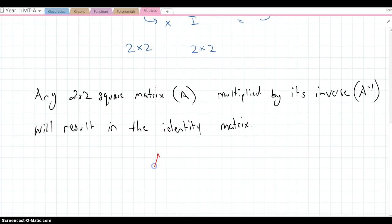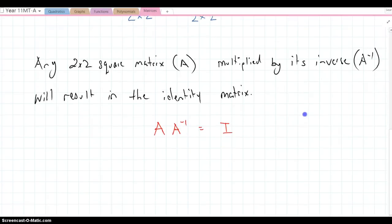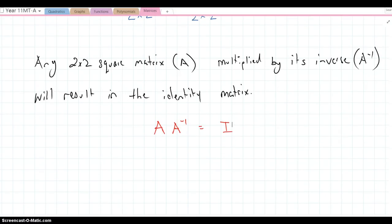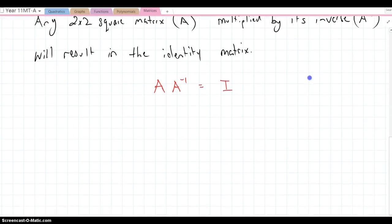So what we've said there is that A times A to the minus 1 equals the identity matrix. A matrix multiplied by its inverse is the identity matrix. So how do we find the inverse of a matrix?